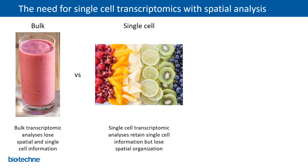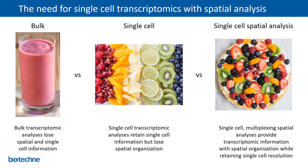With the advent of single-cell transcriptomic technologies such as single-cell RNA sequencing, now you can find out the composition of this fruit smoothie or your tissue — you can find out what fruits are going into the smoothie, or find out what cell types are actually making up your tissue of interest. While this technique has been quite powerful and you retain single-cell information, you still don't have the spatial organization. These cells or fruits can be laid out in a 3D organizational structure, so it's really important to know the spatial relationship between all these cells. To complete the picture — to get the whole fruit pie or the entire tissue analysis — really requires a single-cell multiplexing spatial analysis approach that provides transcriptomic information with spatial organization while still retaining single-cell resolution.